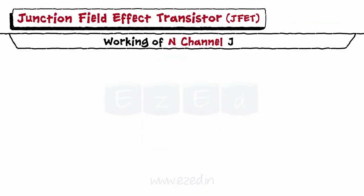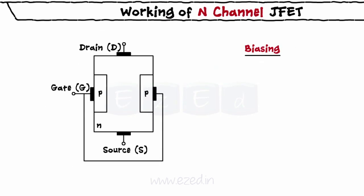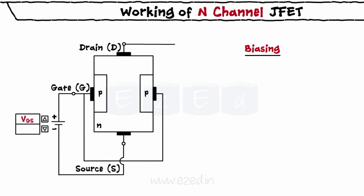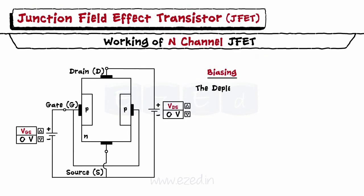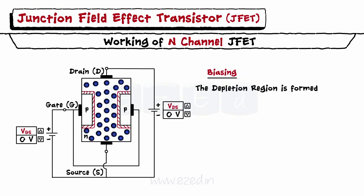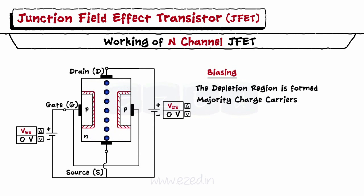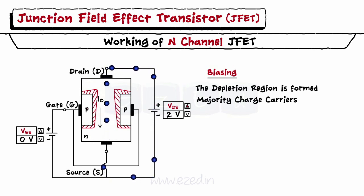Moving forward towards the working, let's bias the JFET with two voltage sources: one between the gate and the source as VGS, and the second between the drain and the source as VDS. The source acts as a common terminal. Initially, as no voltage is applied, the depletion region is formed across the two P-N junctions. Being of N-type, the drain-to-source channel contains electrons as majority charge carriers. Application of a small drain-to-source voltage makes these electrons flow from the source to the drain, as the positive voltage at the drain attracts them. Thus, the drain current flows through the JFET from the drain to the source.